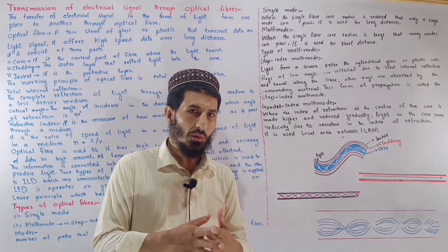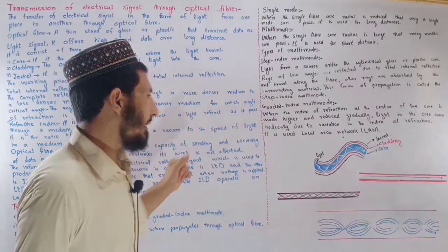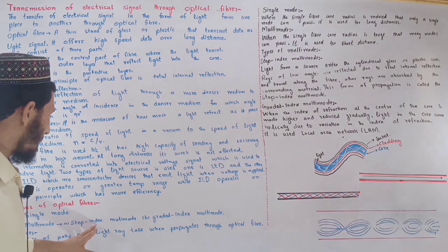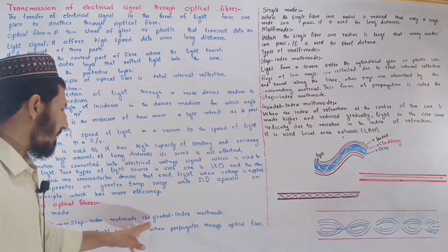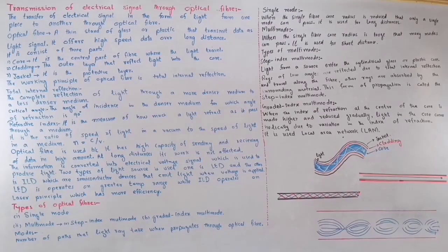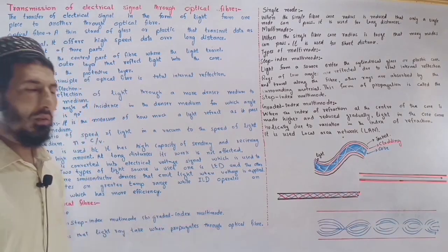There are types of optical fiber. A mode is a path that a light ray takes when it propagates through optical fiber. The two main types are single-mode and multi-mode, and multi-mode is further divided into step-index multi-mode and graded-index multi-mode.